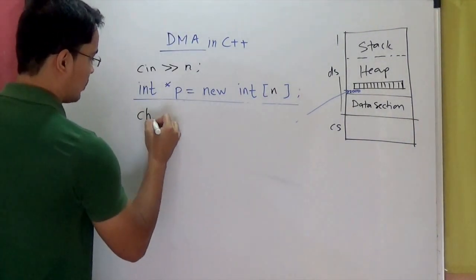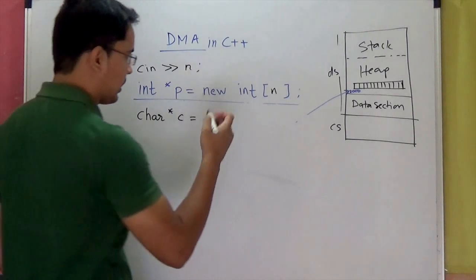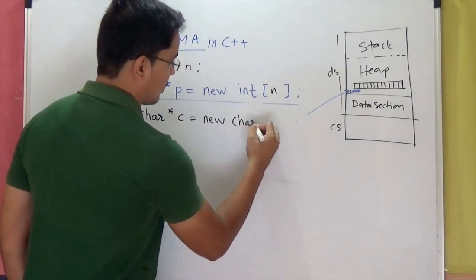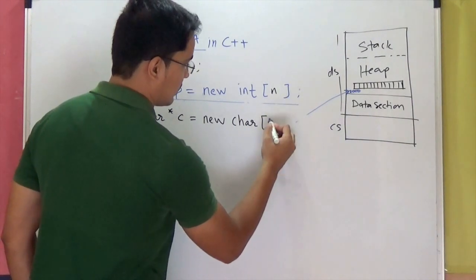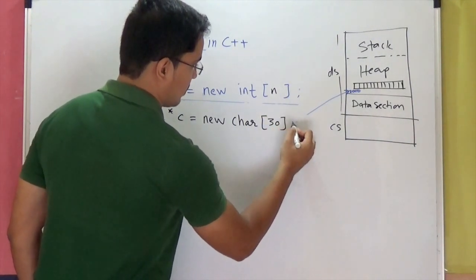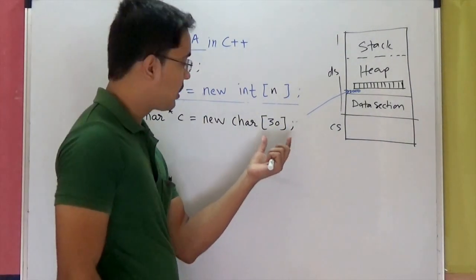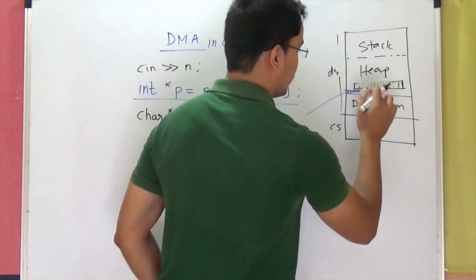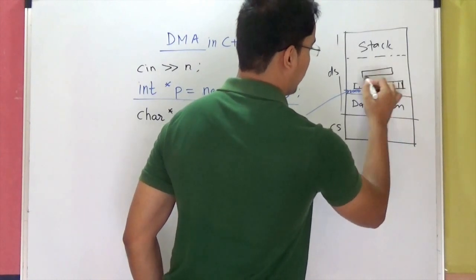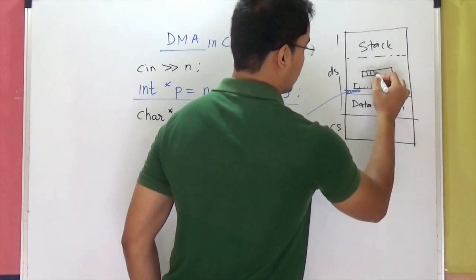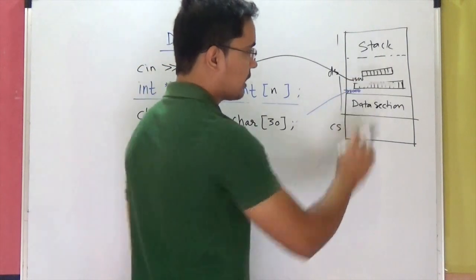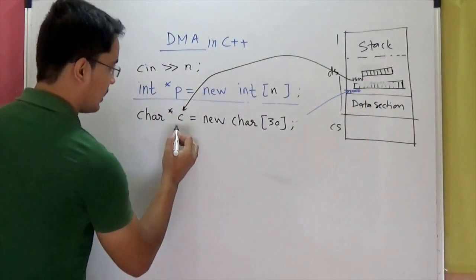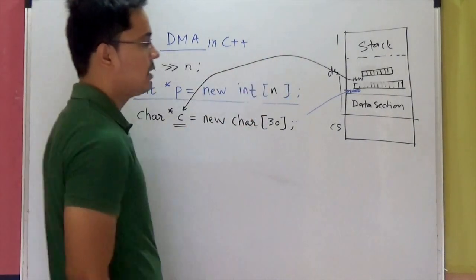Now let's take another example. Let's say I want to store a string of dynamic length. So I'll say new char and let's say 30. So I want memory for storing 30 characters dynamically from heap. So it will try to find from heap a memory block for storing 30 characters. Whatever the starting address of that memory block is, that starting address will be returned to C. So C will store that starting address.